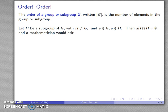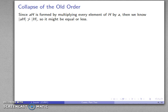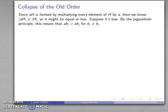You might want to think about why that happens. A mathematician would then ask: how does the size of aH — the number of elements in aH — compare to the number of elements in H? Because aH is formed by multiplying every element of H by a, it can't get larger; we can't have more elements in aH than we started with. So it might be equal, or maybe it's less. If it's less, then by the pigeonhole principle, we must multiply a by two different elements of H and get the same result.